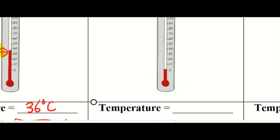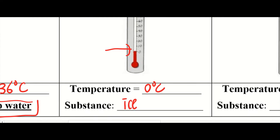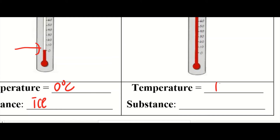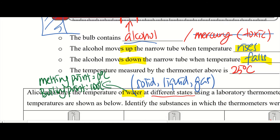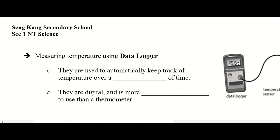The next thermometer is at 100 degrees Celsius, so the substance should be steam — water in gas state. So we know how to read the thermometer — this one is quite simple.